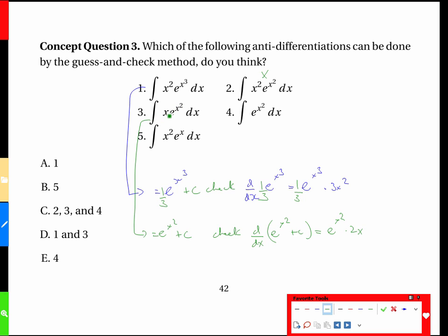We get e^(x²) times 2x—that's almost what we were starting with. We just need to get rid of that 2, so we put a half everywhere, and that becomes our antiderivative. So 1 looks good, 3 looks good.